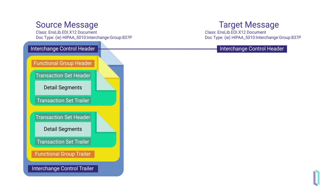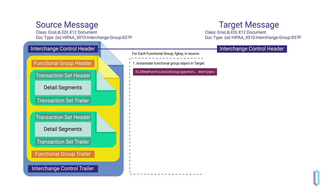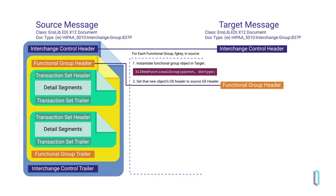Next, begin looping over the functional groups within the interchange envelope, using a for-each loop that references the current iteration with a key such as FG key, or functional group key. Following the five main steps, begin by creating a functional group in the target message and setting the GS header for this group equal to the GS of the current iteration. Let's look at how these two steps are performed in the DTL editor.